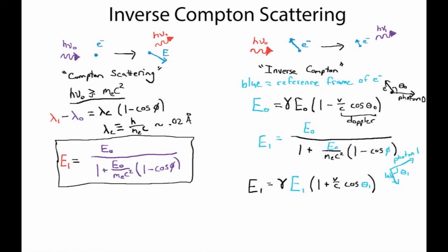One subtle point: we jumped into the inertial frame of the electron prior to the scattering. Once the scattering happens, that electron may actually be moving a little bit in that reference frame, because the electron underwent an acceleration. So boosting into the inertial reference frame of the electron before the scattering doesn't ensure the electron is at rest after. When we jump back into the laboratory frame, we're jumping back from the inertial frame of the initial electron, and the plus sign reflects that our velocity has changed directions as we go back.